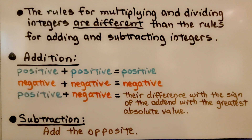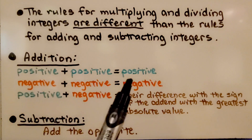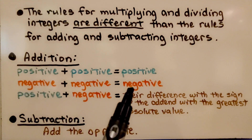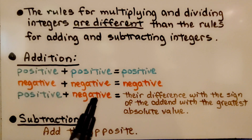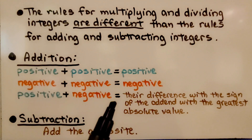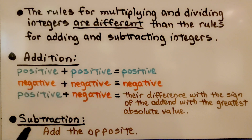The rules for multiplying and dividing integers are different than the rules for adding and subtracting integers. In the last few lessons we've learned that for addition, if we're adding a positive to a positive, our sum is positive. If we're adding a negative and a negative, our sum is negative. If we're adding a positive and a negative, it doesn't matter which order they're in — we find their difference and take the sign of the addend with the greatest absolute value. And for subtraction, we just add the opposite and take the sign of the number with the greatest absolute value.